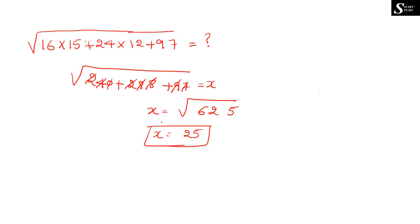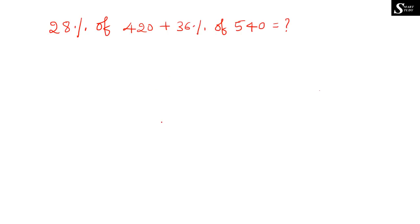I hope you understood. The next question is: 28% of 420 plus 36% of 540 is equal to what? So 28% can be taken as 30 − 2%, which makes it easier to calculate. And 36% can be taken as 40 − 4%.